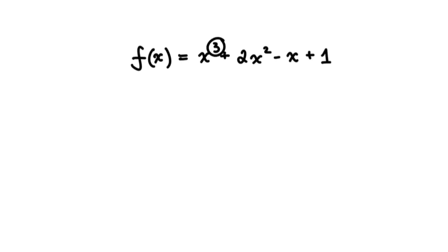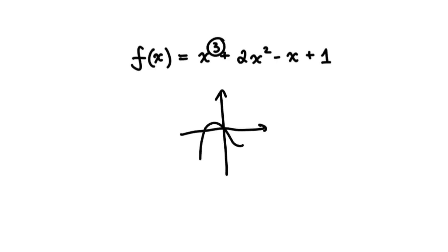The number of turns the function has is 1 less than the degree of the function. If I were to sketch this function, it means that this function would have 3 x-intercepts maximum, but it could have less, and it has 2 turns. It could look something like that — with x-intercept 1, 2, and 3 — and it has 2 turns: one local maximum and one local minimum.